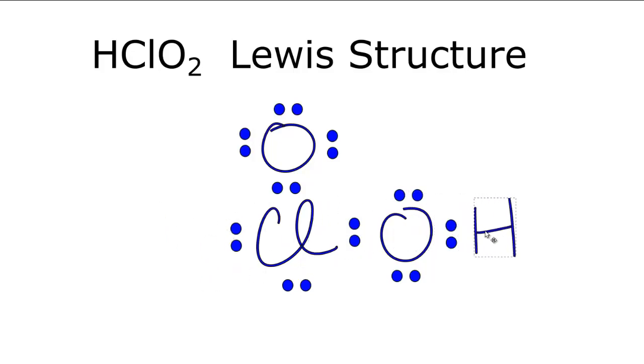Move it over here, and everything is the same in terms of the number of valence electrons but if we recalculate our formal charges, we'll see they're a little bit different. The oxygen here now has a formal charge of zero. This oxygen has a negative one, and the chlorine here, it has a charge of plus one.